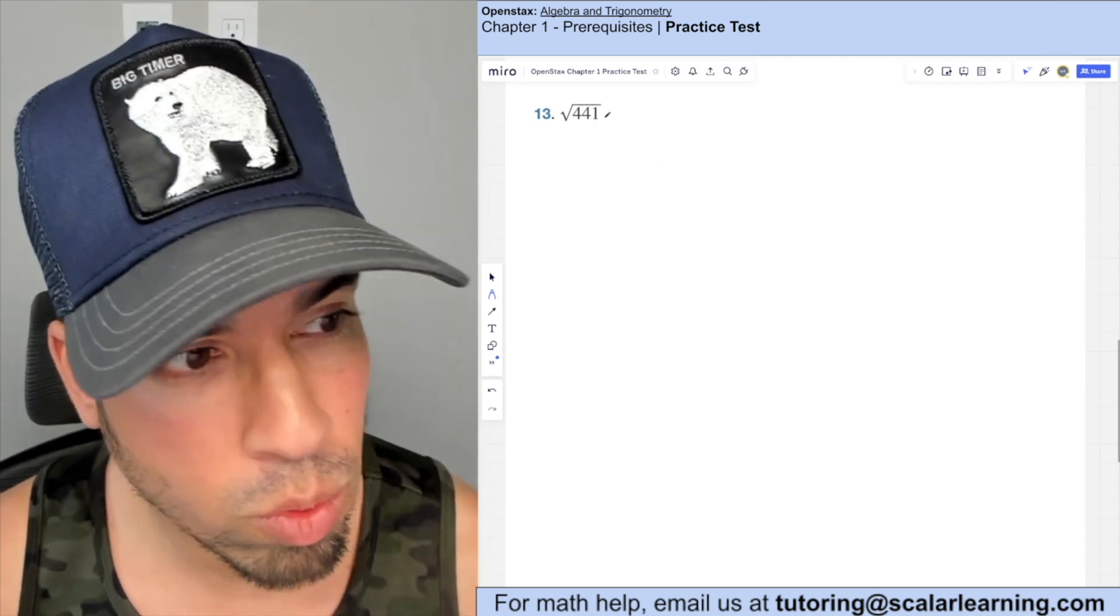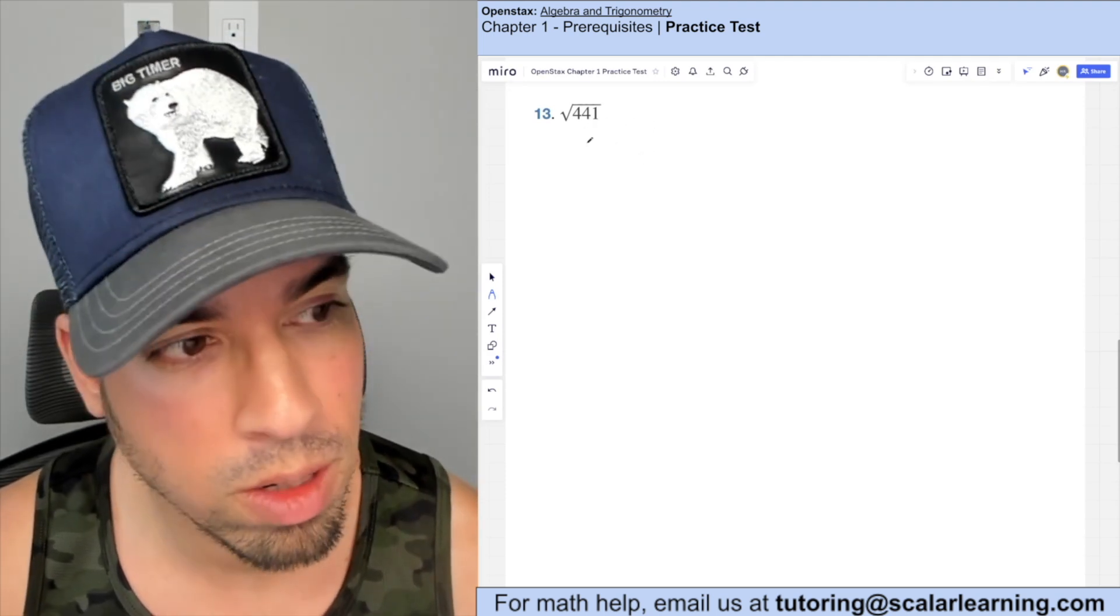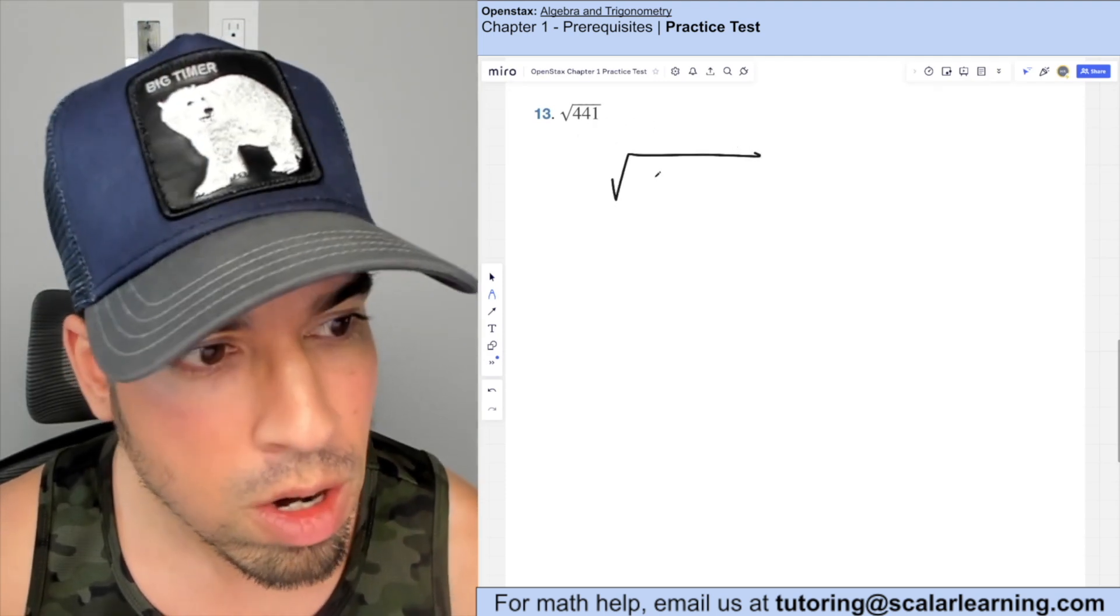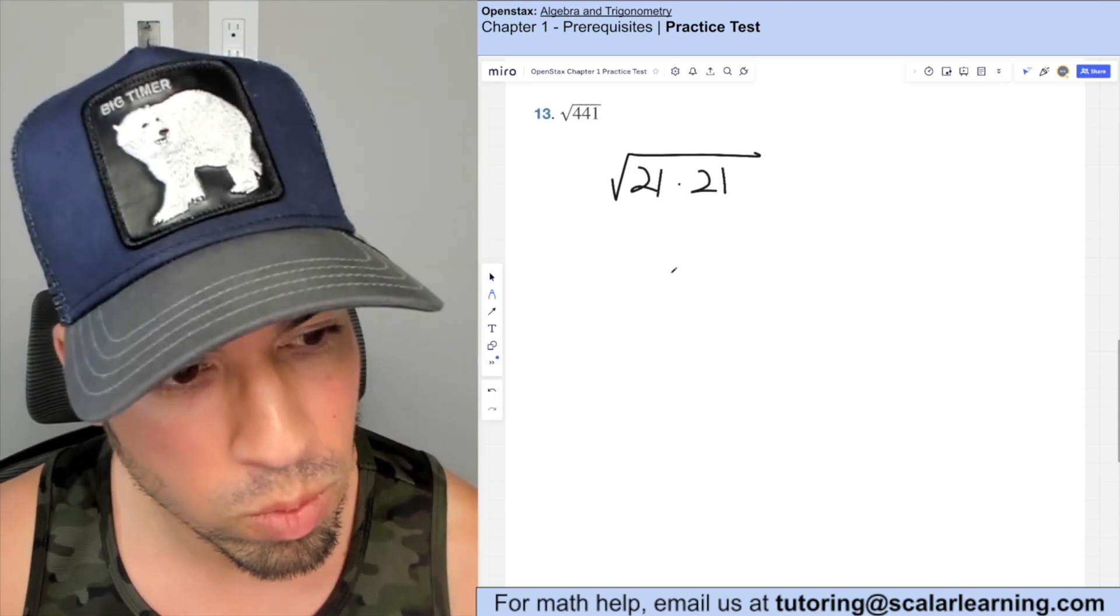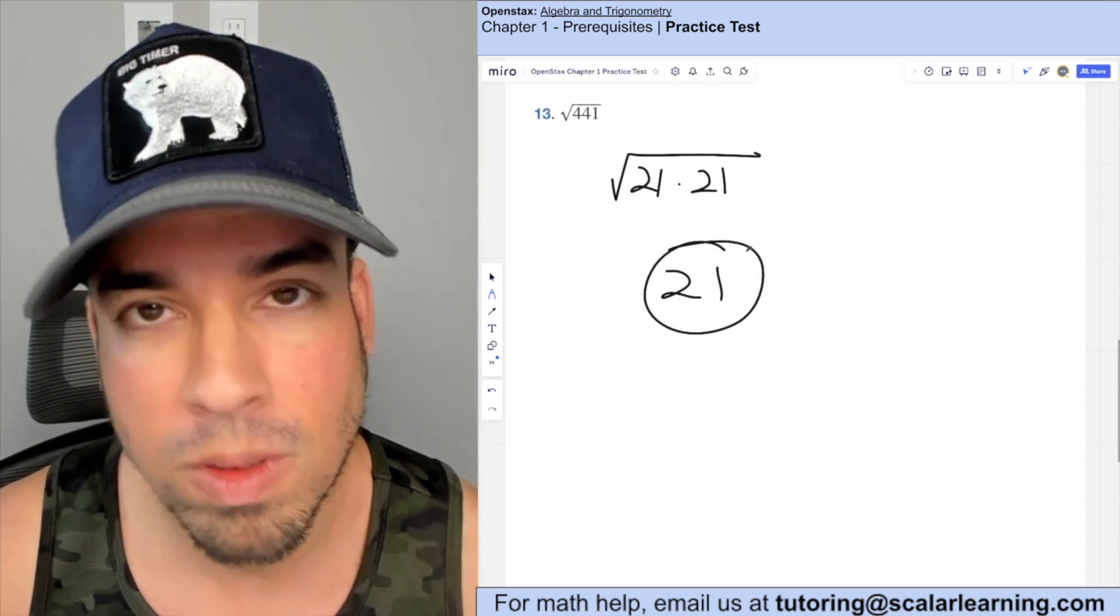In this one, we're taking the square root of 441. Guess what, it's a perfect square. 441 is actually 21 times 21. So the square root of 441 is 21. Boom, done.